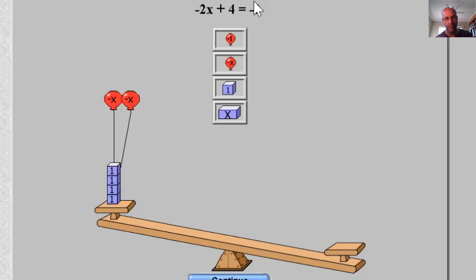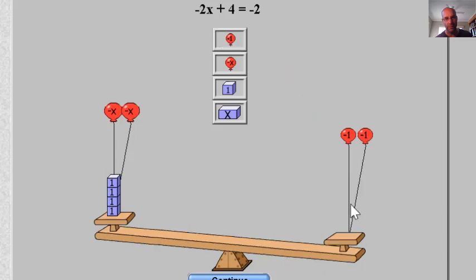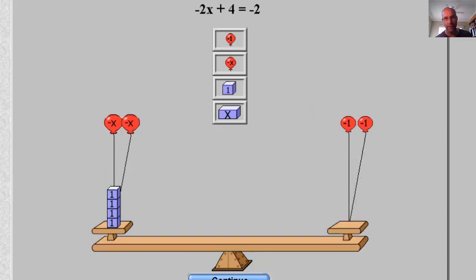That's not balanced anymore, but if we look at the right side we've got a negative 2. So that's a negative 1 balloon, that's a negative 2. And look, now it's balanced and we could go through and solve that.